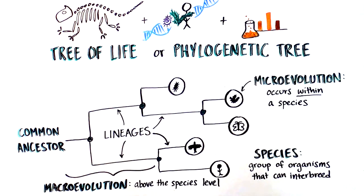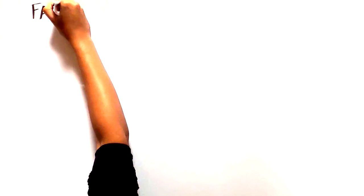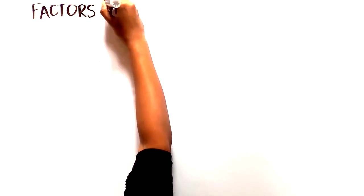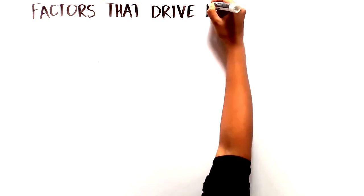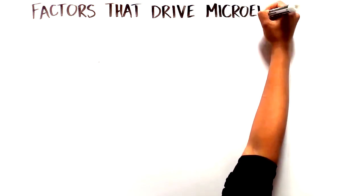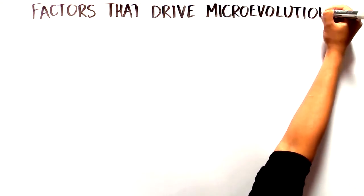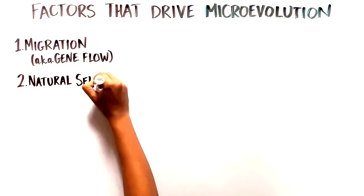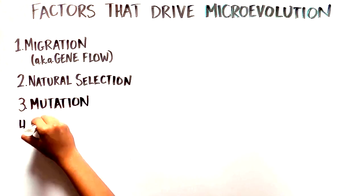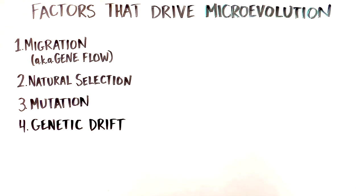Let's zoom in to talk about microevolution. Every population contains inherent variation, and there are multiple factors that can influence how frequently a given variant is found in that population. These factors include migration, also known as gene flow, natural selection, mutation, and genetic drift, and they drive microevolution within a population.